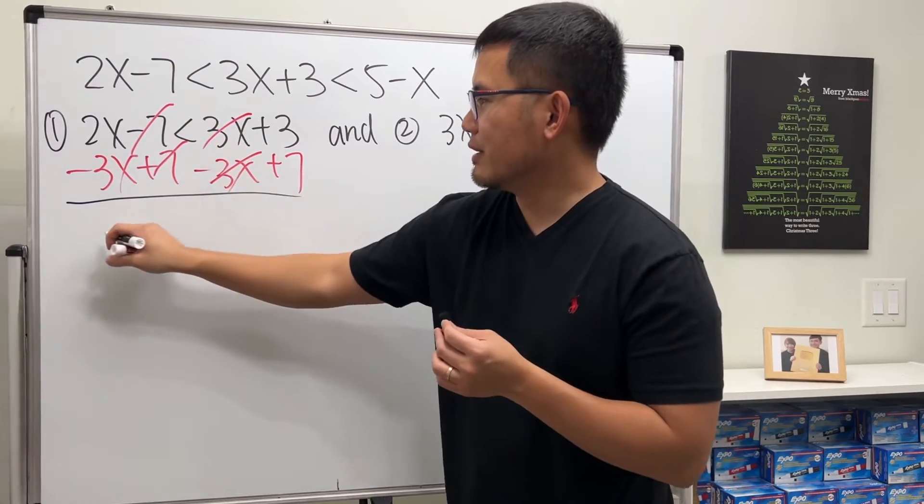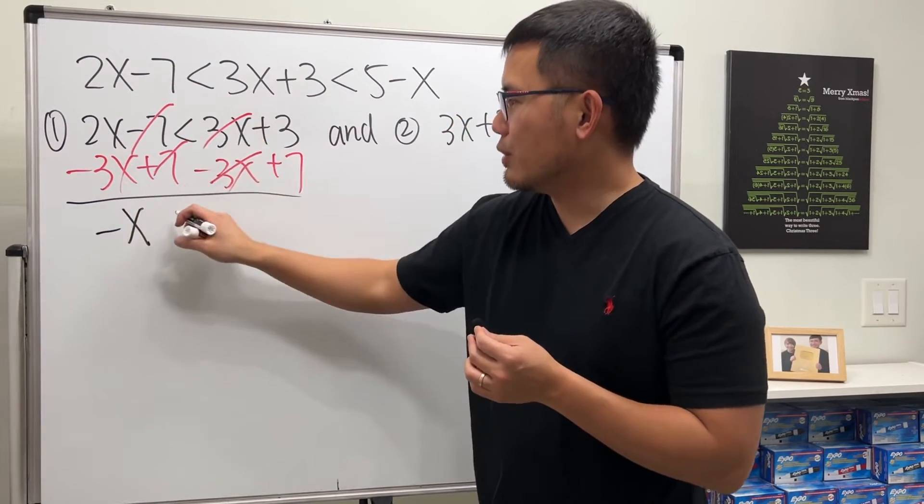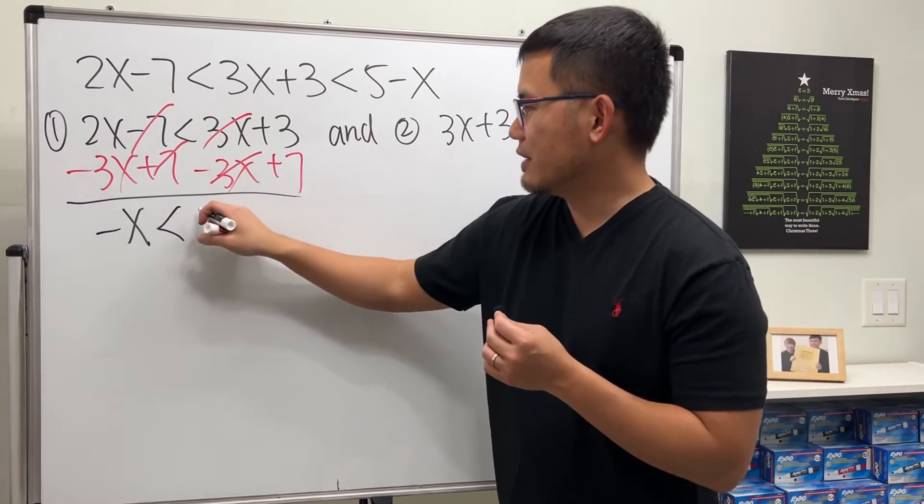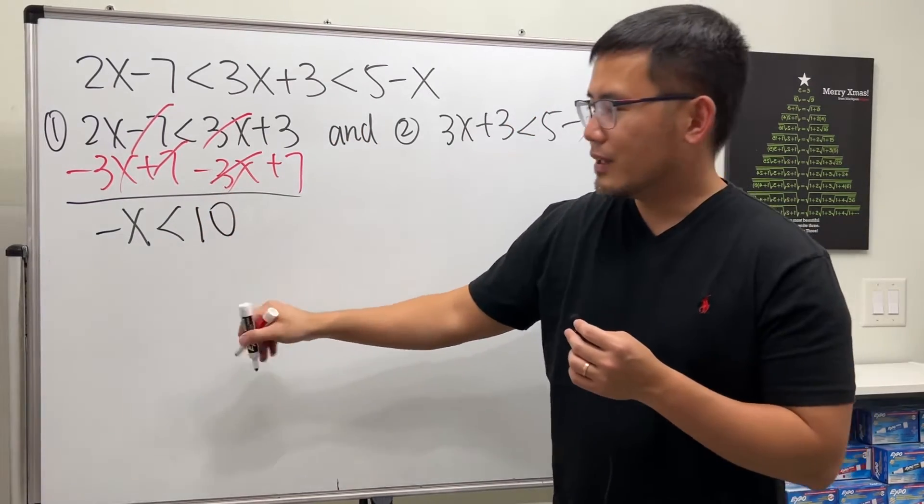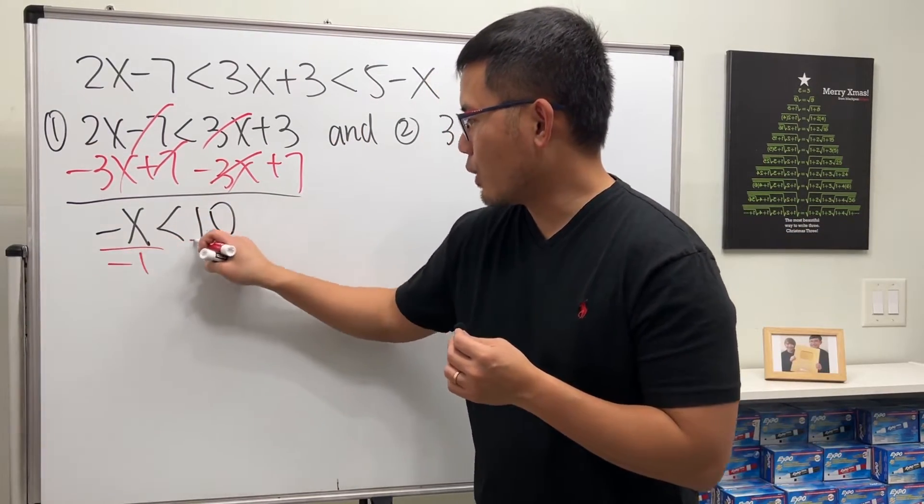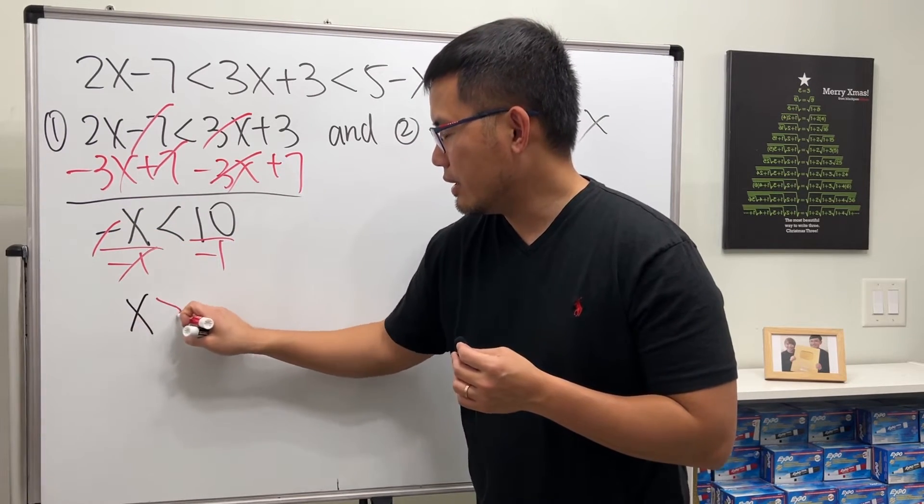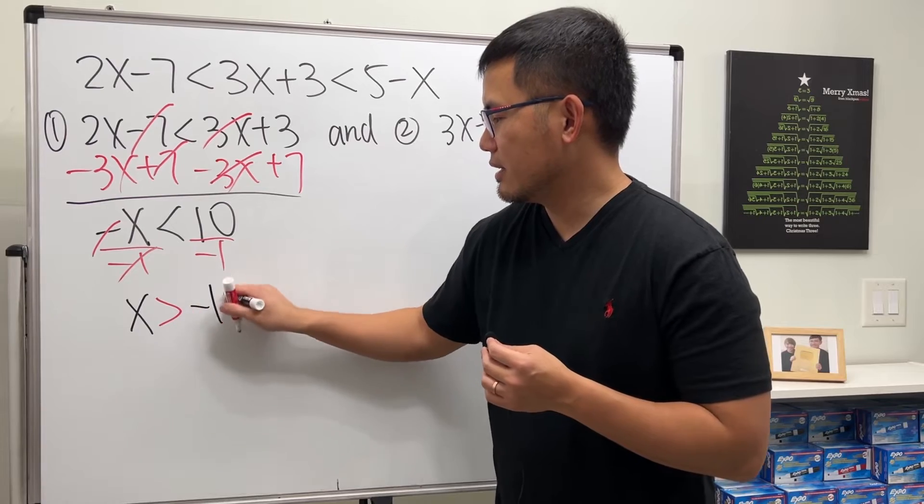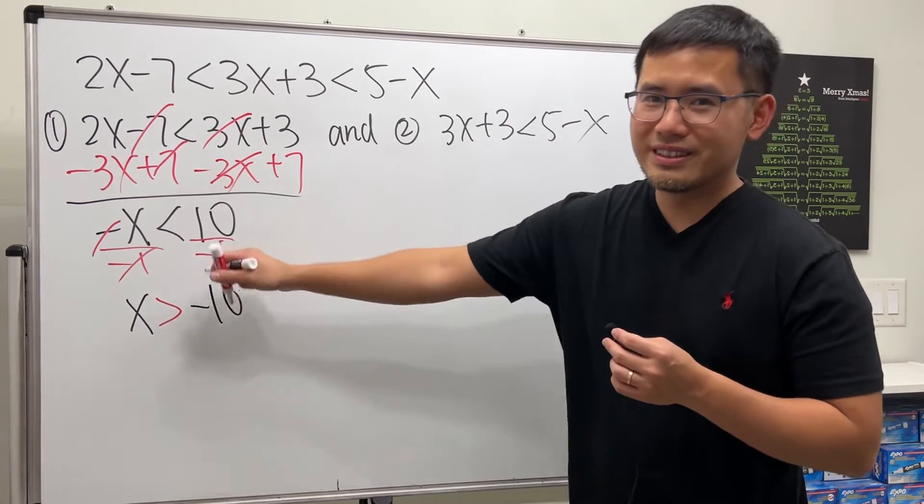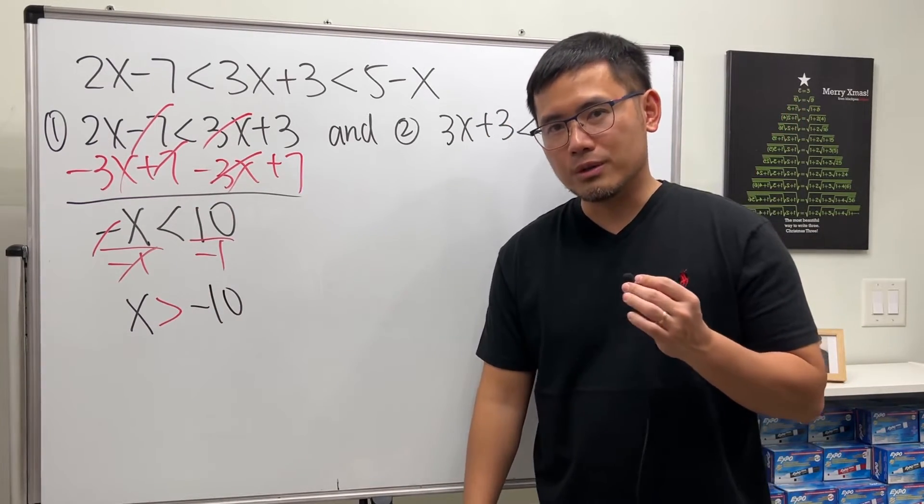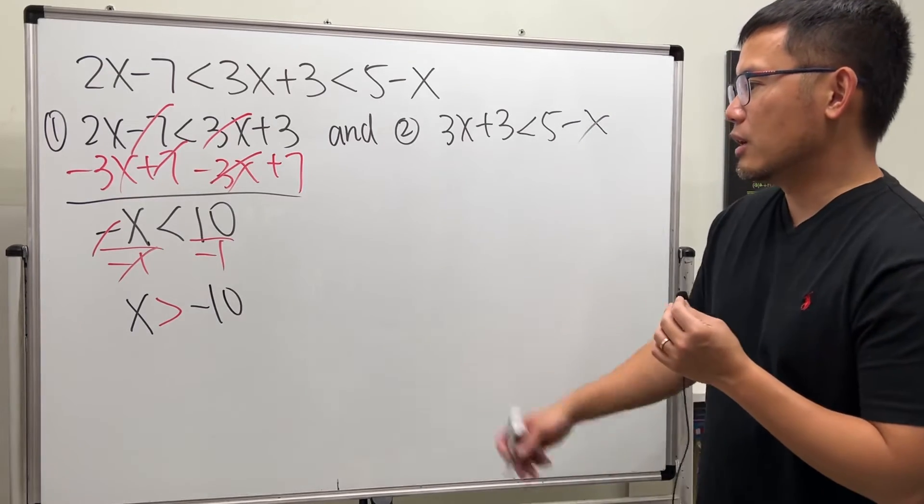And then this right here, negative x, still less than. And then 3 plus 7, 10. Then we are going to divide both sides by negative 1. So make sure we write x is greater than negative 10. Switch the inequality symbol, right? Whenever we multiply or divide a negative on both sides of an inequality.